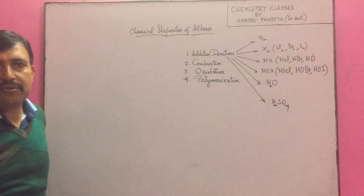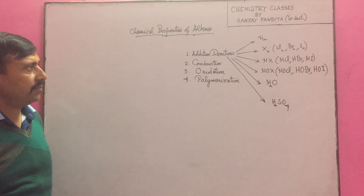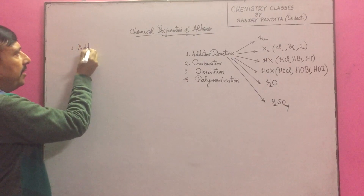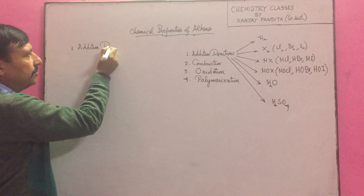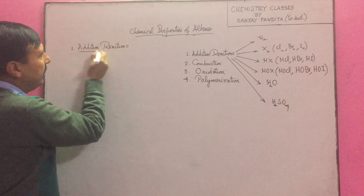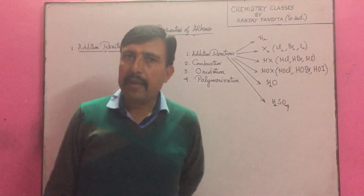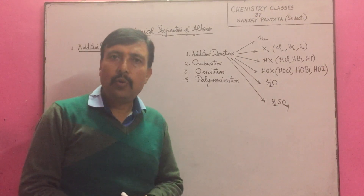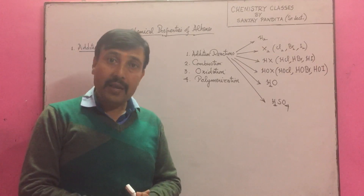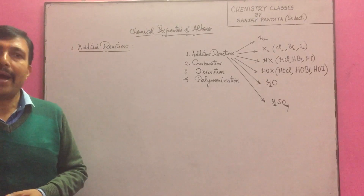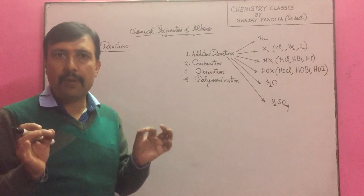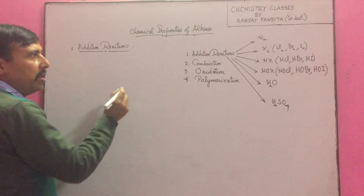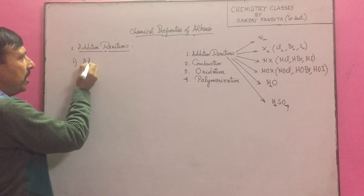These are some of the important addition reactions of alkenes. In the previous lessons I explained that alkanes, which are saturated hydrocarbons, show substitution reactions. Unlike alkanes, alkenes show addition reactions due to the presence of a double bond. Now we will explain addition of hydrogen first.